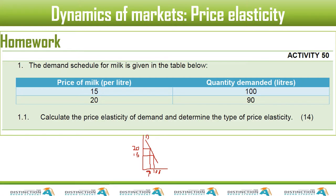Calculate the price elasticity of demand and determine the type of price elasticity. The initial price is 15, so price goes up from 15 to 20, and as a result demand drops from 100 to 90. What you have to find is the percentage change in quantity demanded divided by the percentage change in price.